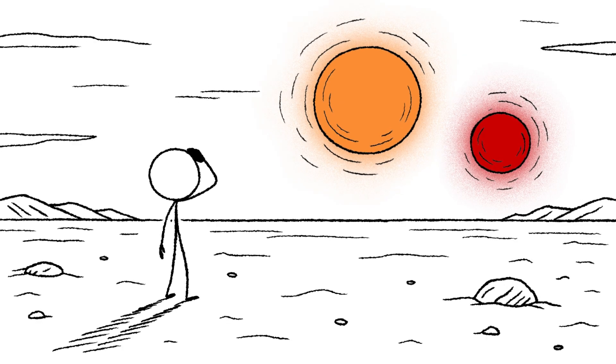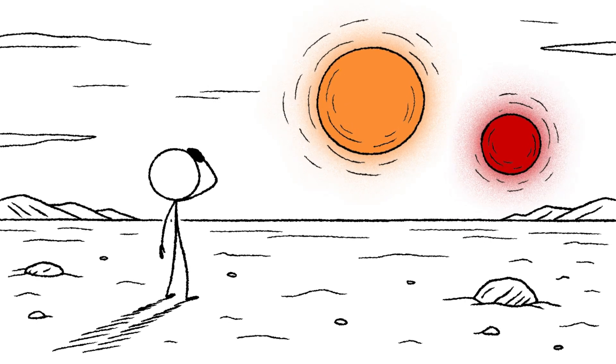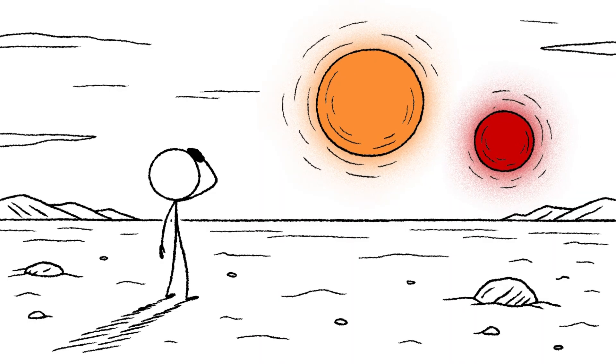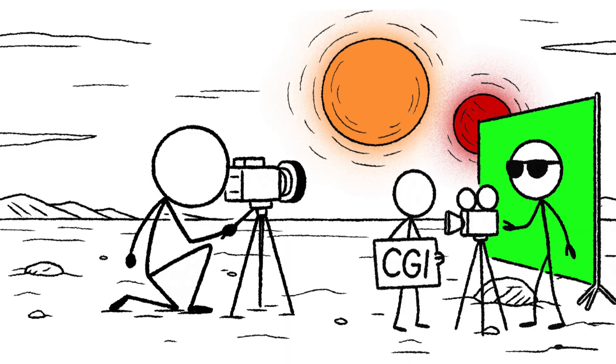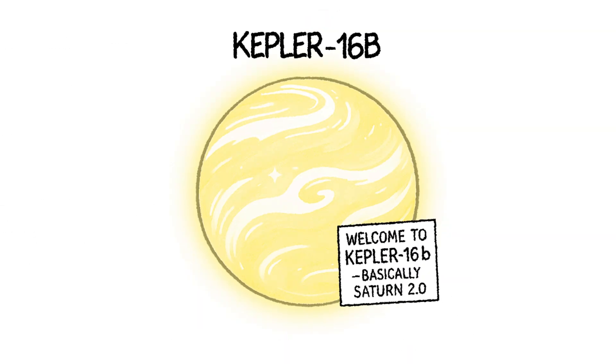You're looking up. Two suns, one orange, one deep red, are setting over a sweeping horizon. This isn't CGI. This isn't Hollywood. This is Kepler-16b, the definitive real-life Tatooine.